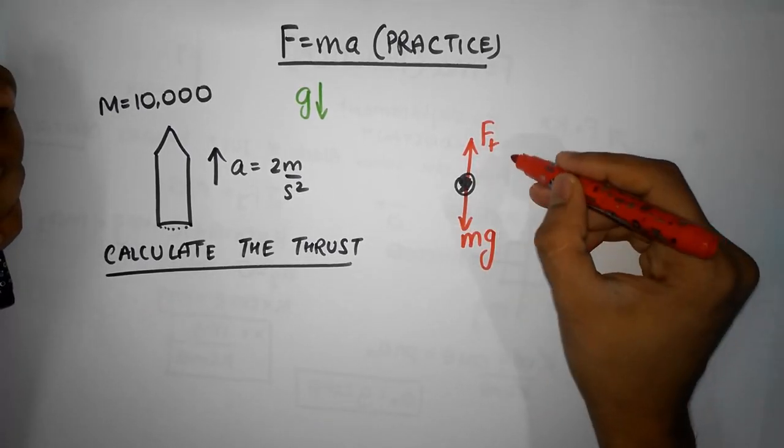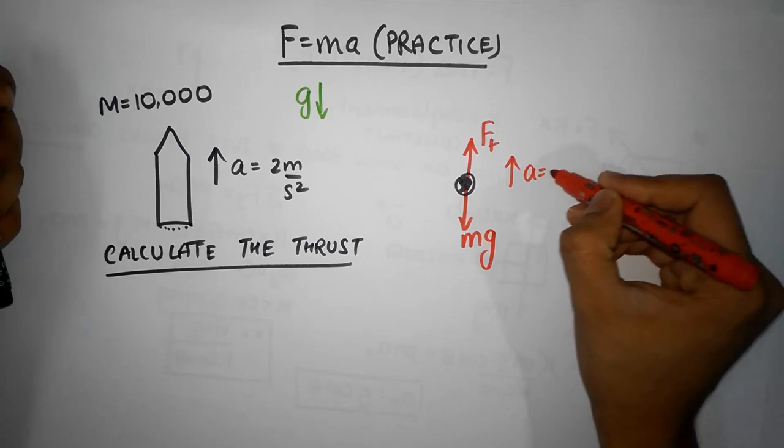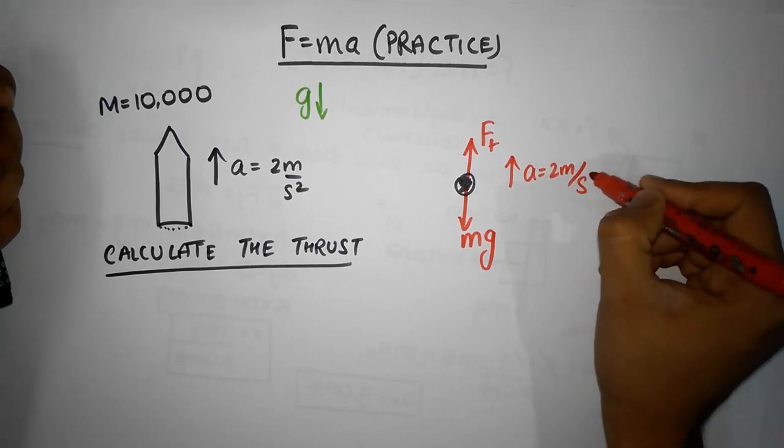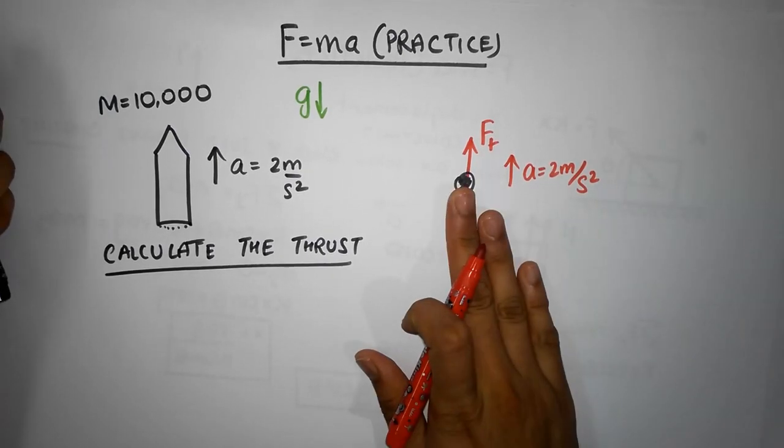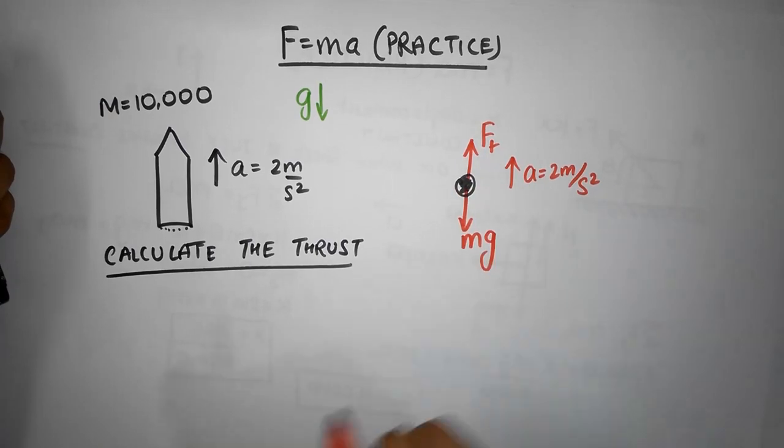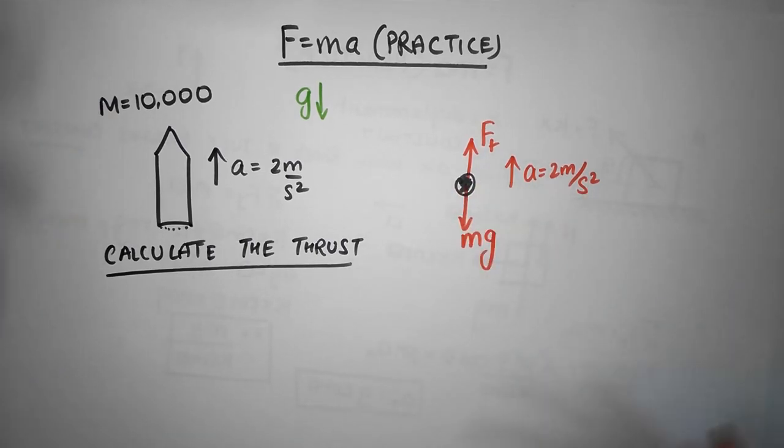And together they give you an acceleration of 2 meters per second squared. Most of the time people forget about this gravity and so they get the wrong answer. So once you do this, this is pretty much simple.